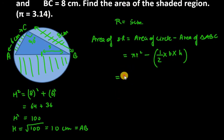So I will replace 22 over 7 with 3.14. Now, r square, it is 5 square minus half base. Base is 6, height is 8. Now, you can reduce 2 and 6 with 3.